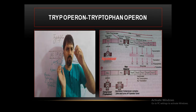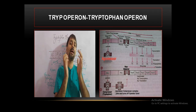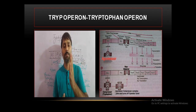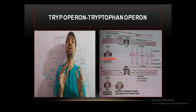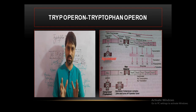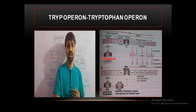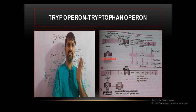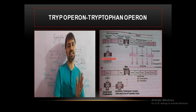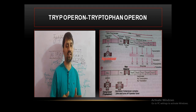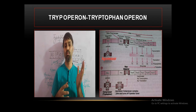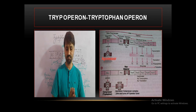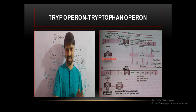The regulator gene forms an aporepressor. The aporepressor requires one more molecule to attach to it to become a fully functional repressor, called the holorepressor. By default, the aporepressor formed by the regulator gene is inactive — it is an inactive repressor. So it will not attach to the operator gene. The operator gene remains switched on, RNA polymerase moves to the structural gene, transcription occurs, translation follows, and tryptophan is synthesized.